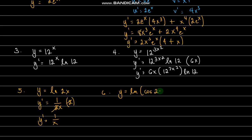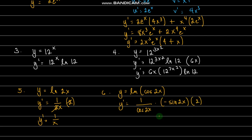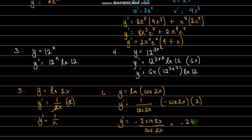Another example: let's say we have y equals ln of cosine 2x. So y prime equals 1 over cosine of 2x, times the derivative of cosine 2x, which is negative sine of 2x, times the derivative of 2x which is 2. Therefore y prime equals negative 2 sine 2x divided by cosine 2x. Since sine over cosine is tangent, this equals negative 2 tangent 2x.